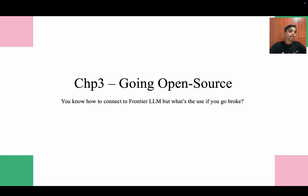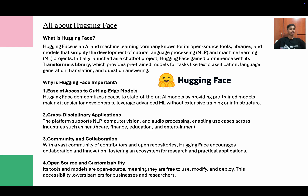To go open source you're going to use Hugging Face, which is a very popular library. Hugging Face is an AI and machine learning company known for open source libraries and models that simplify development for NLP and ML projects. Initially launched as a chatbot project, Hugging Face gained prominence with its Transformers library, which provides pre-trained models for tasks like text classification, language generation, translation, and Q&A.